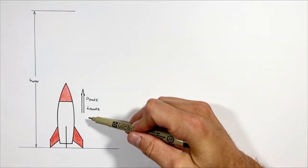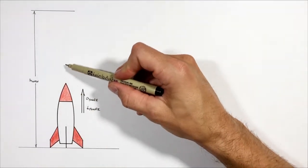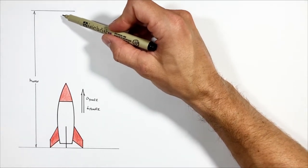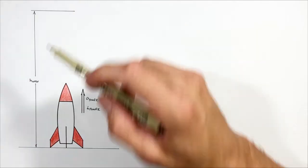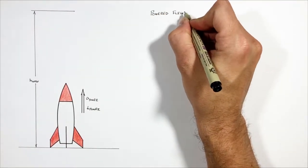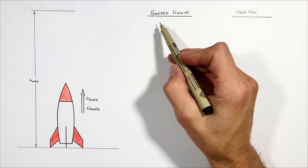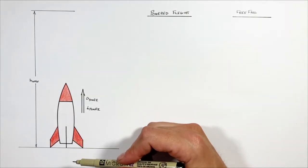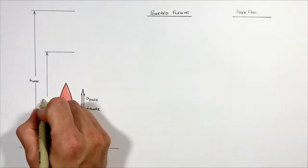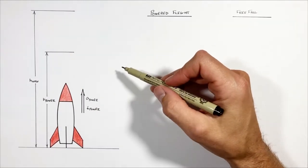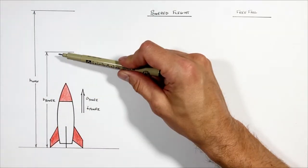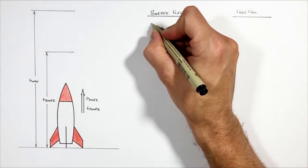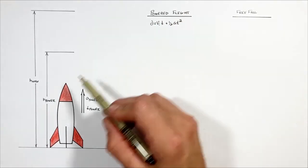To solve this problem, we're going to break the rocket's motion into two phases. The first phase is while the rocket is accelerating upward under its own power. The second phase is as it coasts upward to its maximum height, effectively in free fall. First, I want to look at the upward displacement of the rocket during the powered flight phase using the kinematic equations.